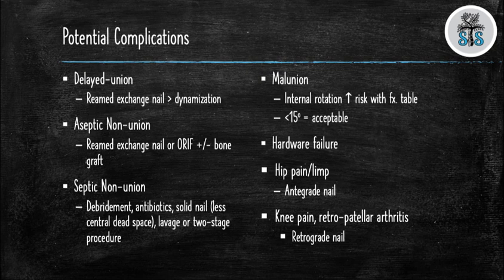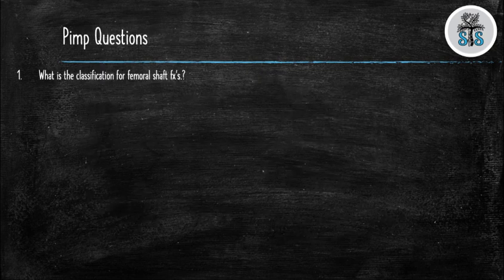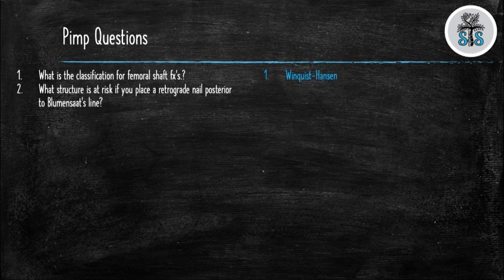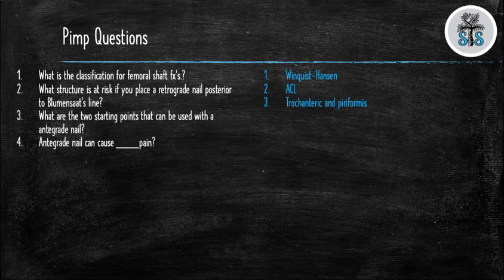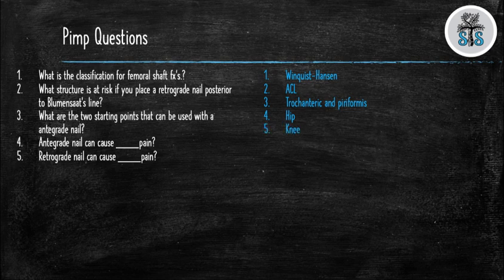Let's finish with some pimp questions. Question 1: What is the classification for femoral shaft fractures? Winquist-Hansen. Question 2: What structure is at risk if you place a retrograde nail posterior to Blumensaat's line? The ACL. Question 3: What are the two starting points that can be used with an antegrade nail? Trochanteric and piriformis. Question 4: Antegrade nails can cause what kind of pain? Hip pain. Question 5: Retrograde nails can cause what kind of pain? Knee pain.